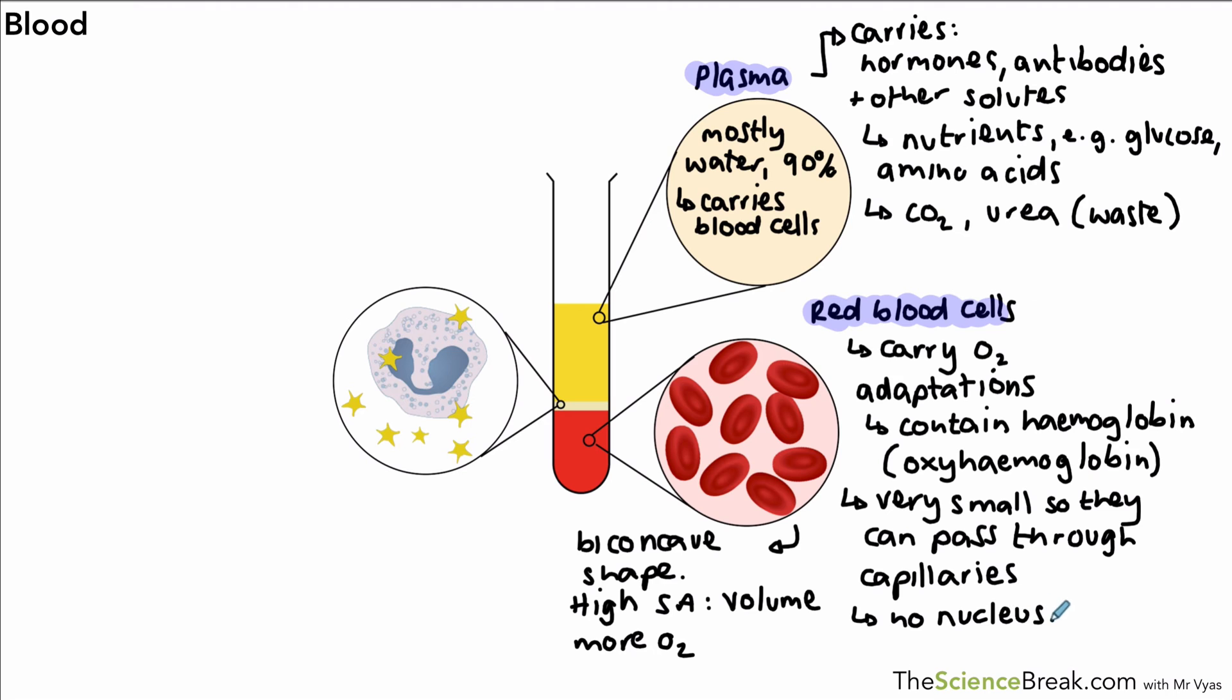They also are the only type of cell that had no nucleus in the body, and that means there is more space to carry more hemoglobin and therefore more oxygen. So these are the adaptations. When you're describing adaptations, it's important that you use linking words like 'so more oxygen is carried,' and we've used it over here as well. We said 'very small so they can pass through capillaries.' So that's a way of making sure you're describing how the adaptation is useful.